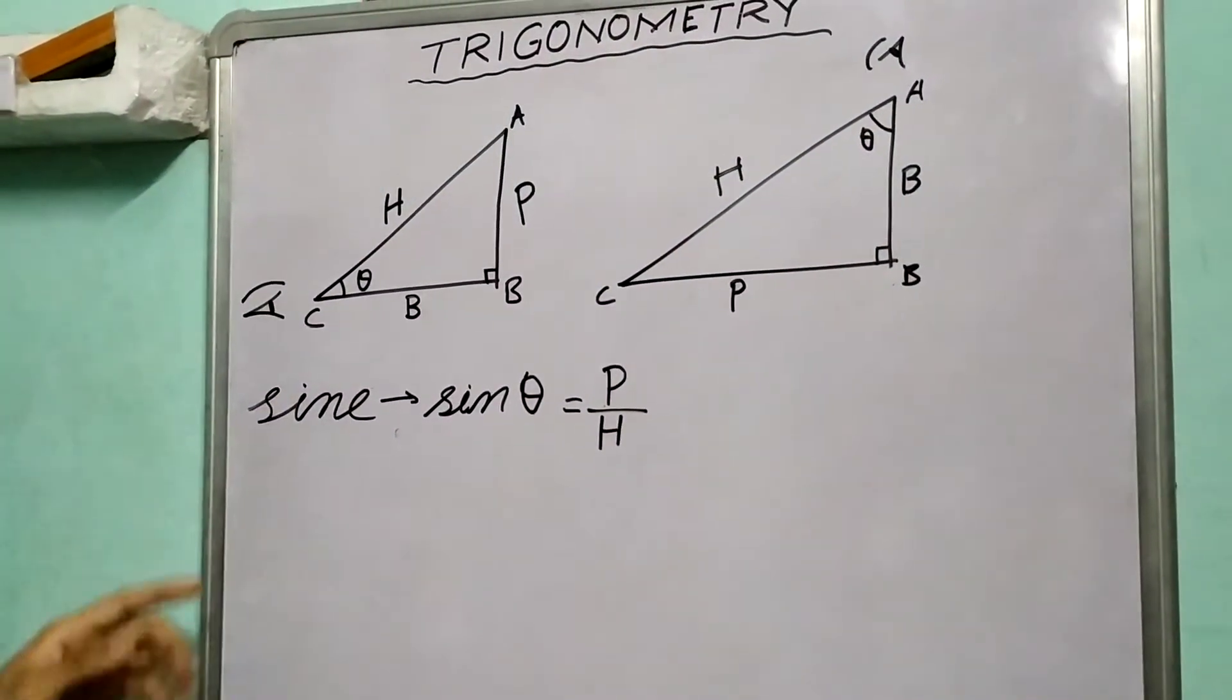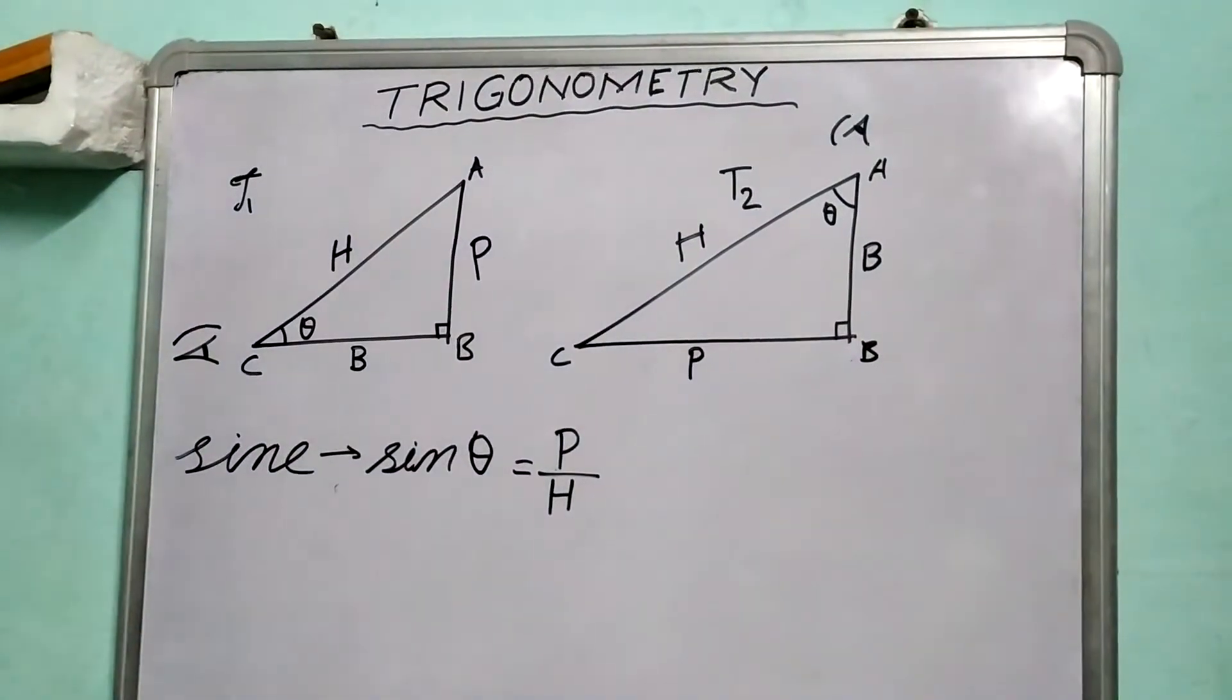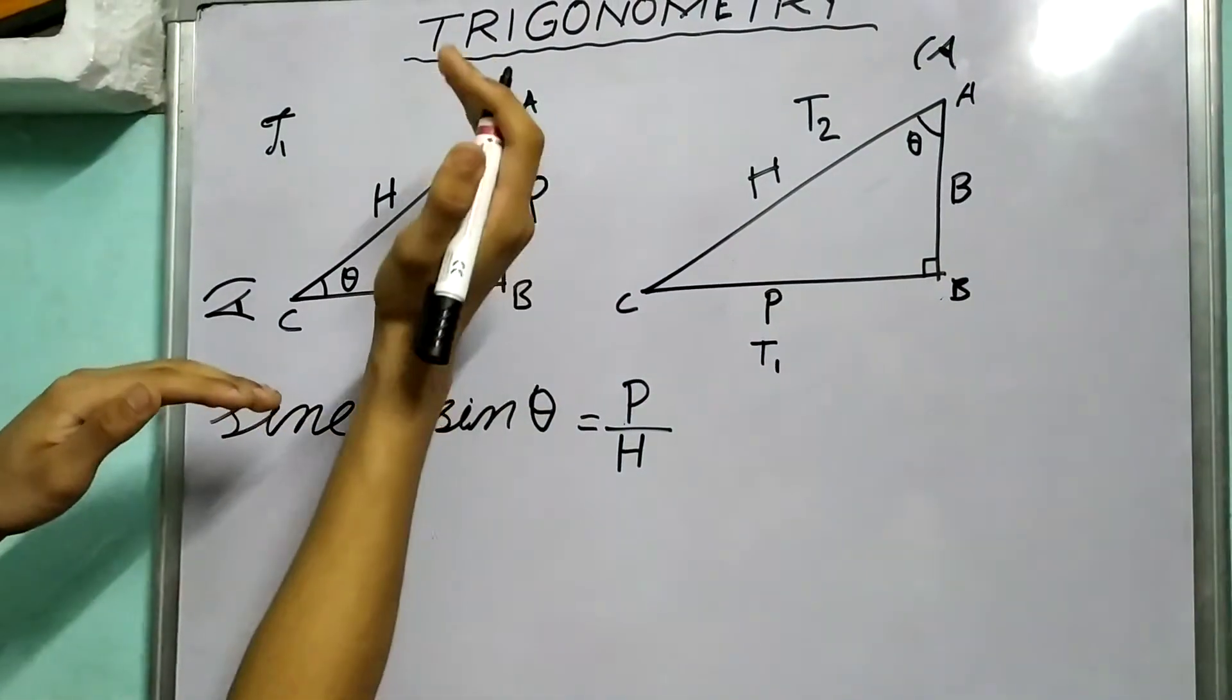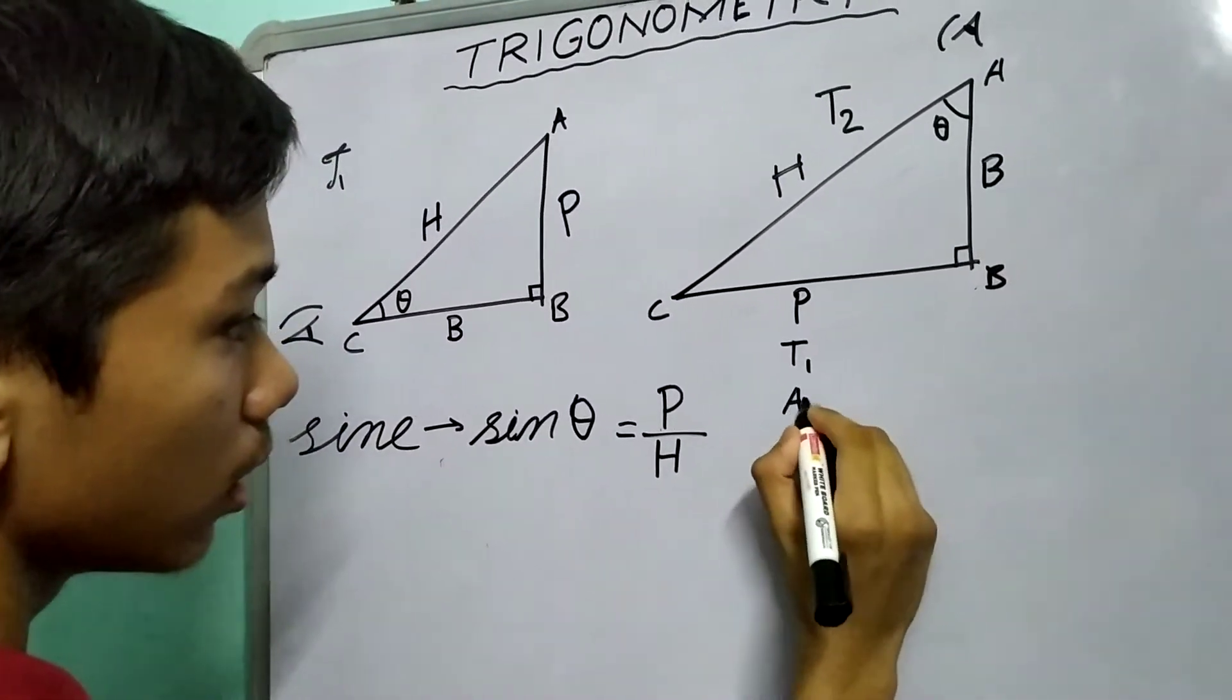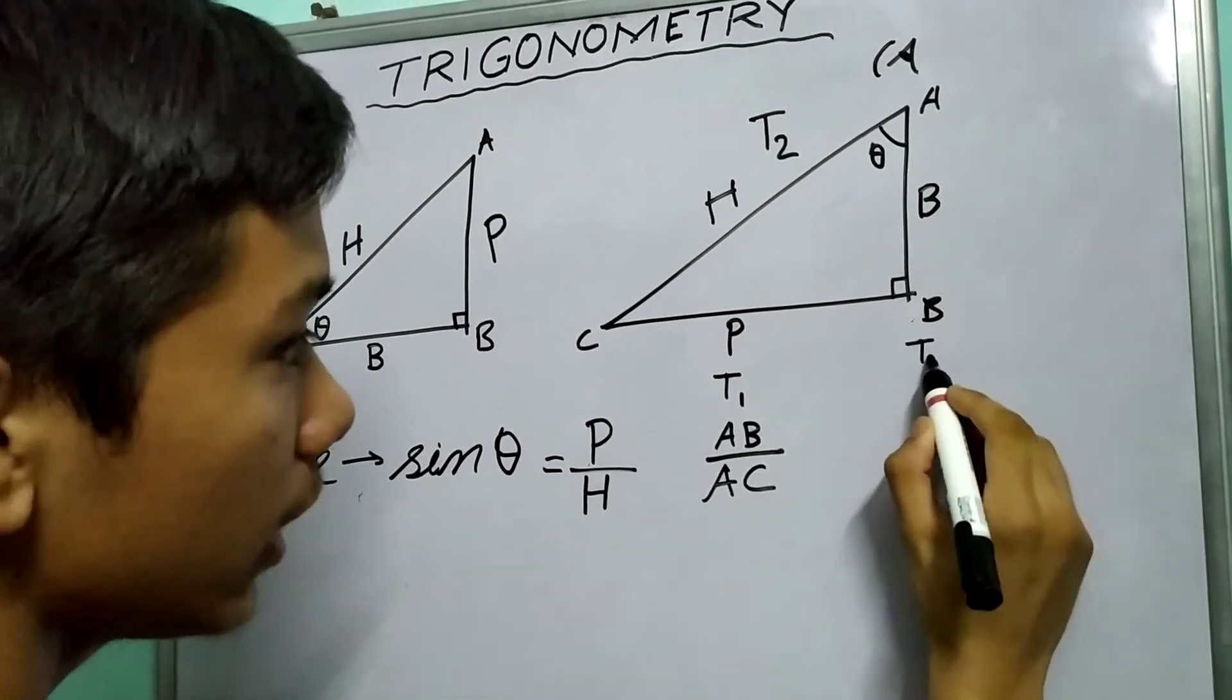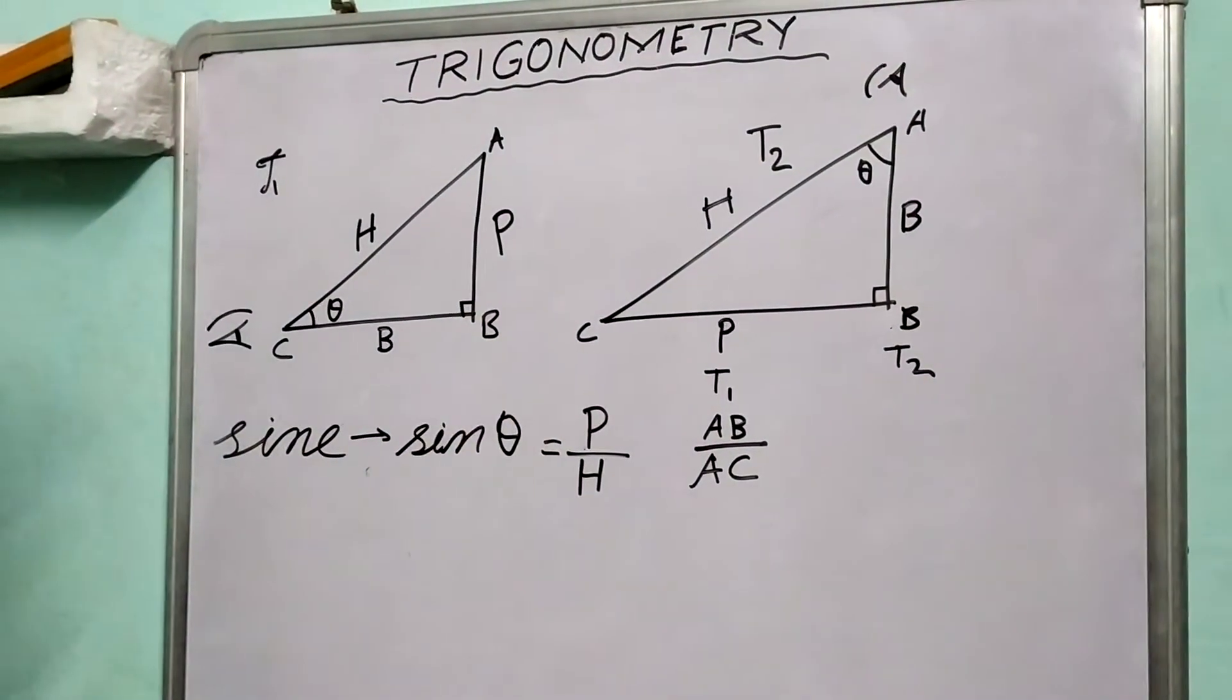Now in this case, if we take this as triangle 1, T1, and T2 triangle 2, so in this case sine theta will be perpendicular, and what is the perpendicular in this case? Perpendicular is AB upon H, or AB upon AC. And as for T2, our triangle T2, they are not different triangles actually, but since theta is different, our values of sine theta will change. So sine theta for T2 is CB upon AC.